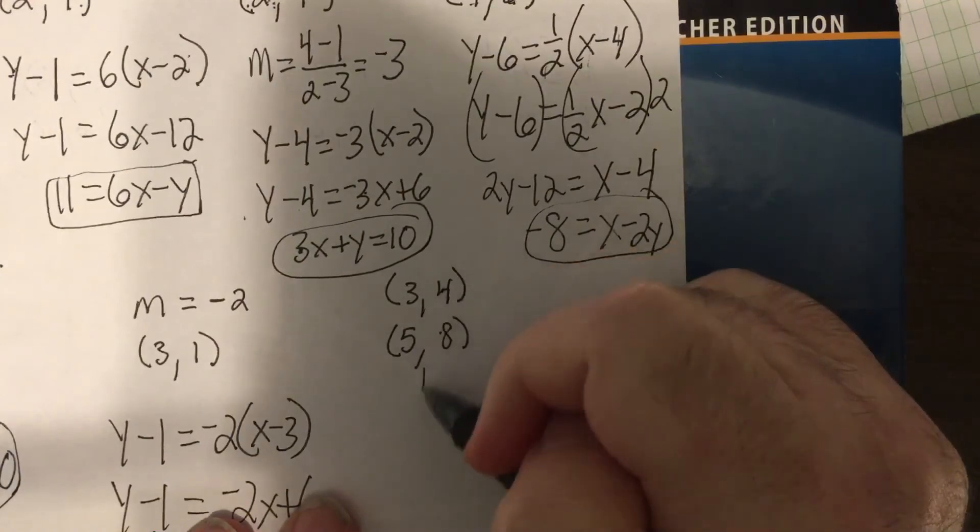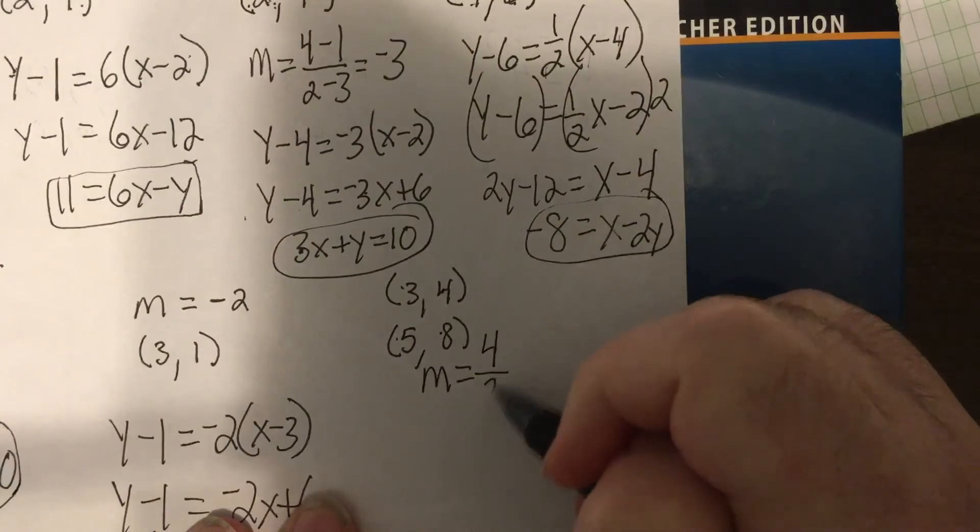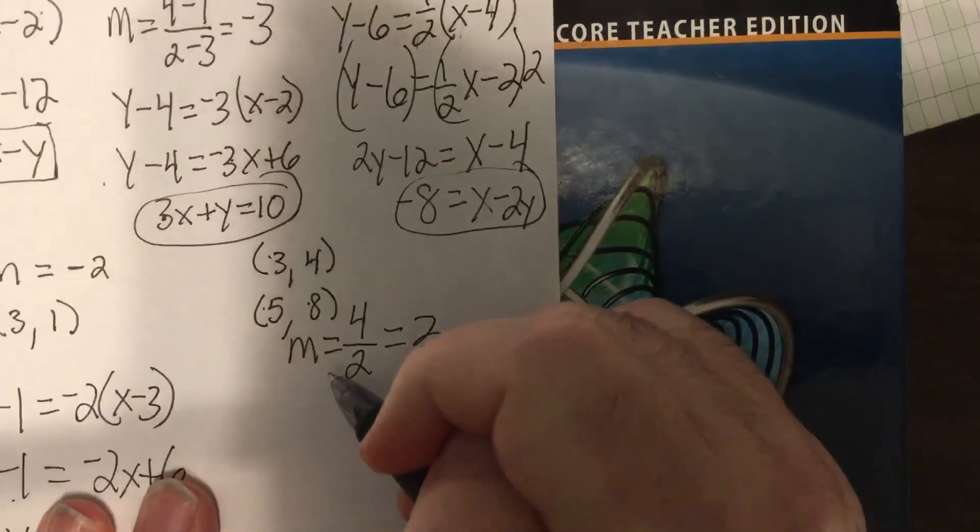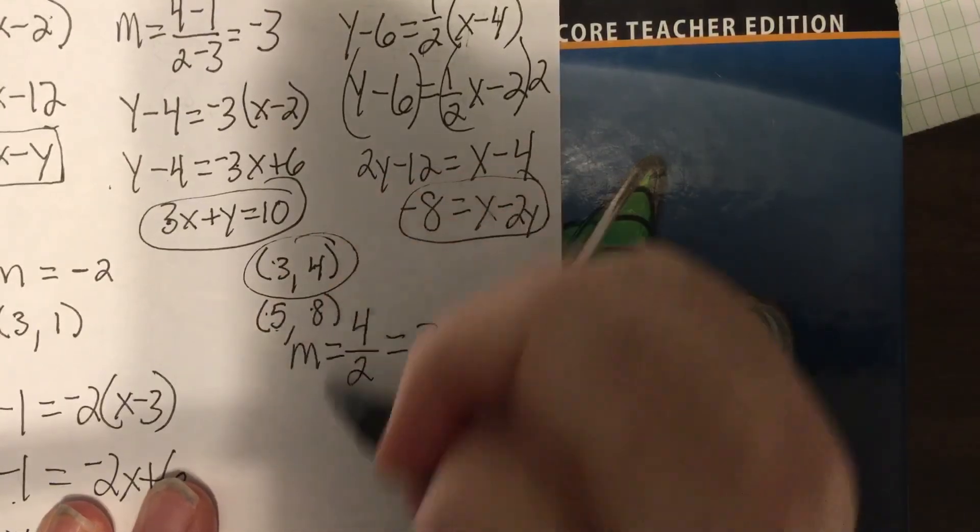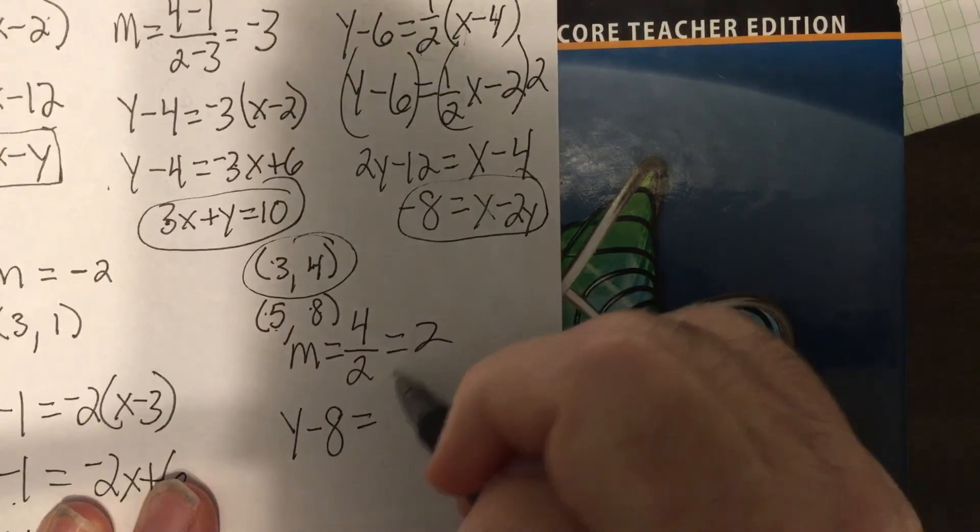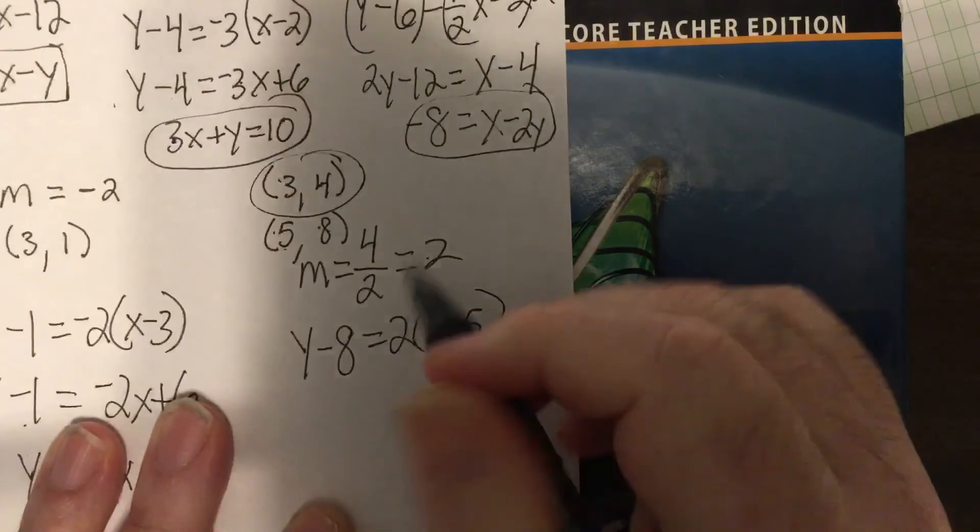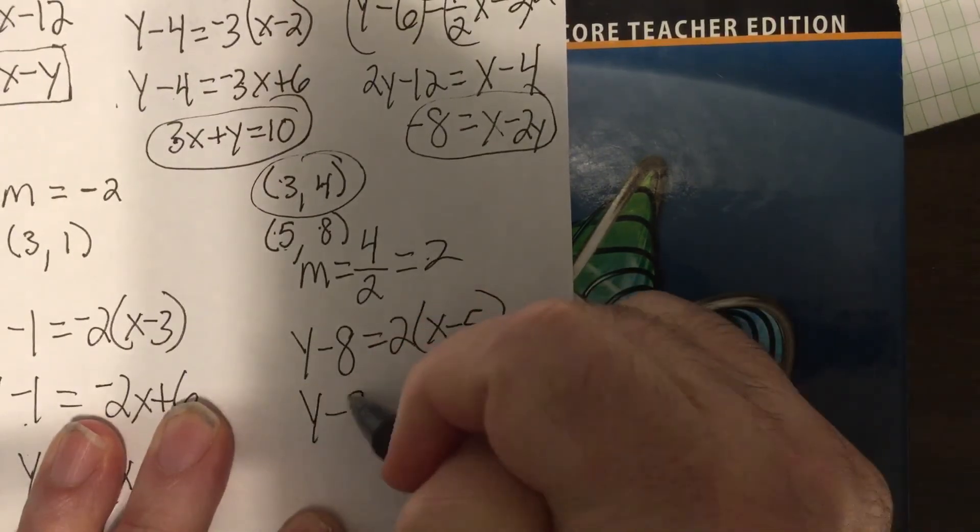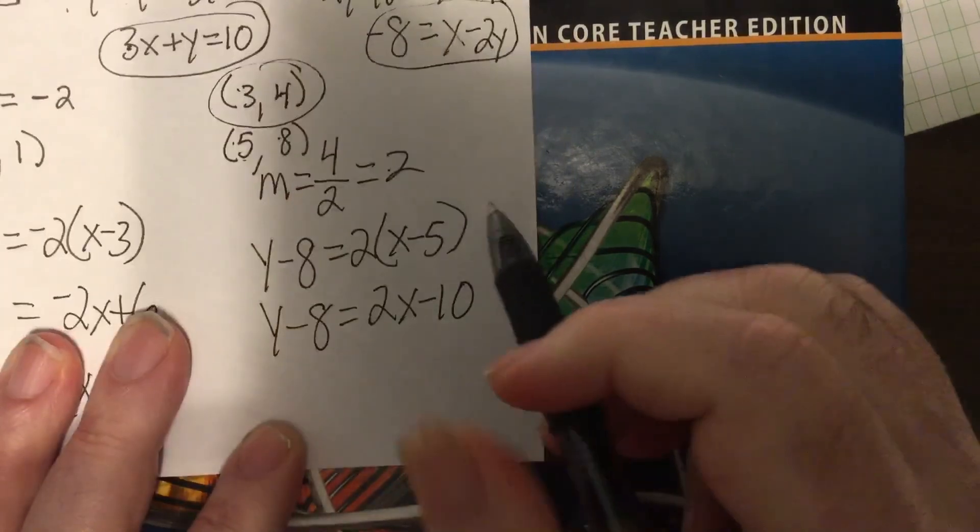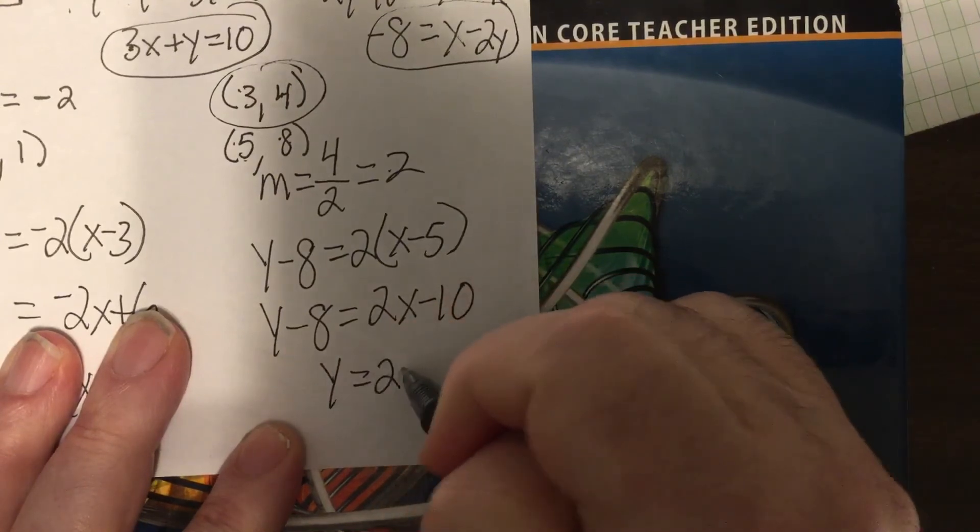Here, 8 minus 4 is 4 over 5 minus 3 is 2. So, that's 2. So, I'm going to pick a point. I'm going to do 3, 4. You can do 5, 8. Do point-slope. y minus 8 equals 2x minus 5. So, y minus 8 equals 2x minus 10. Now, I want it in slope-intercept form. So, I'm going to add 8. Get y by itself.